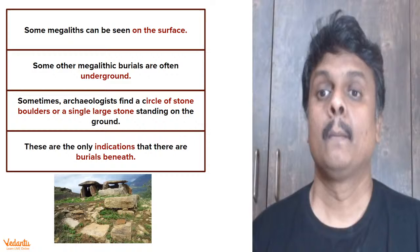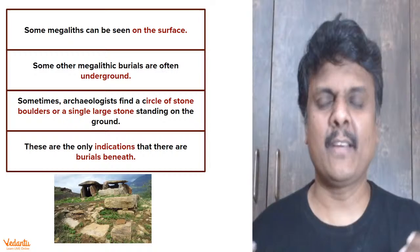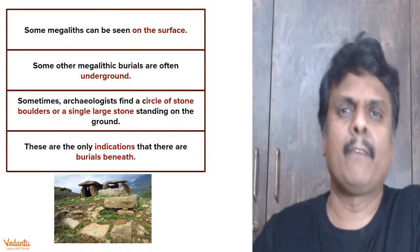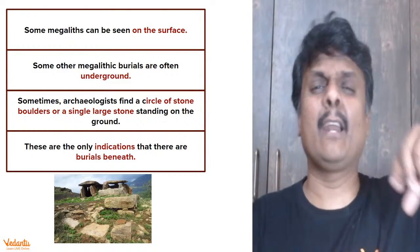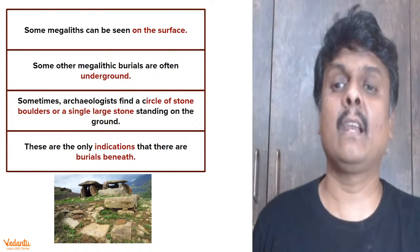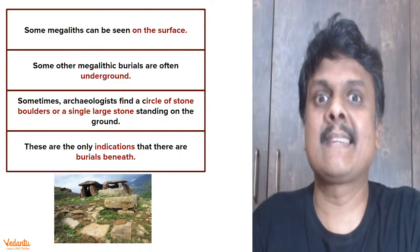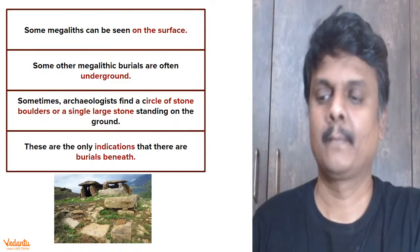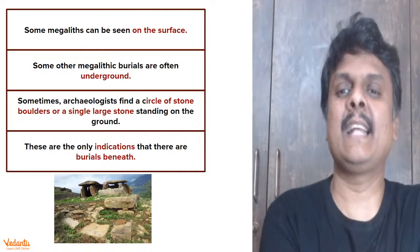Some megaliths can be seen on the surface, but some megalithic burials happen underground. When archaeologists excavate, many interesting things are found - skeletons, jewels, food and much more. When archaeologists find a circle of stone boulders or a single large stone standing on the ground, it is a signal - an indication that there is some burial which has happened underneath.